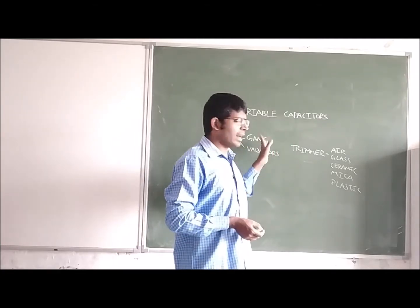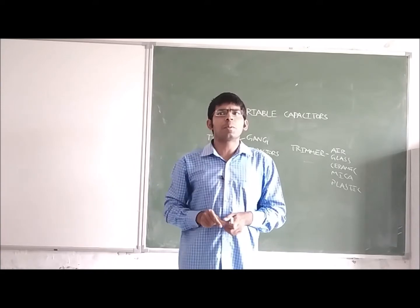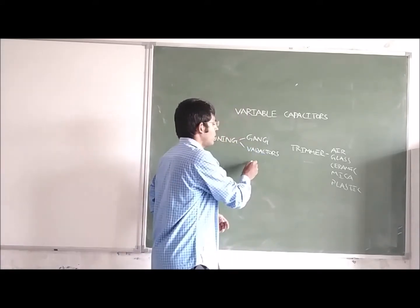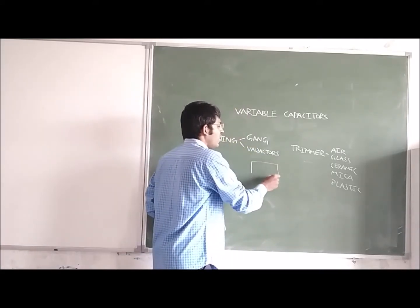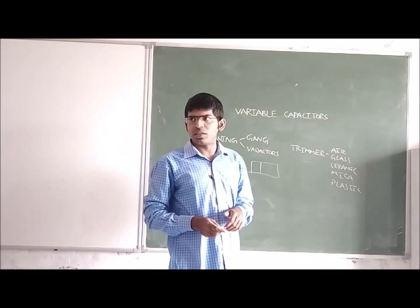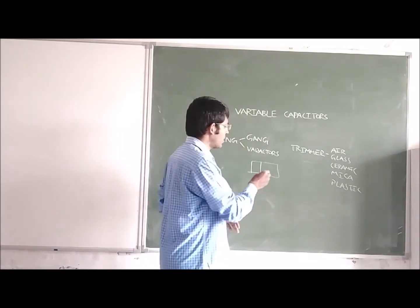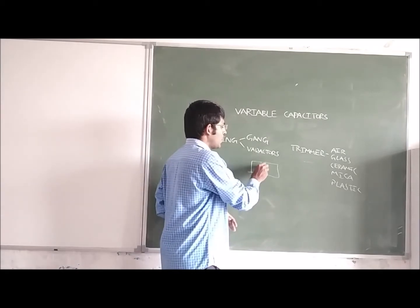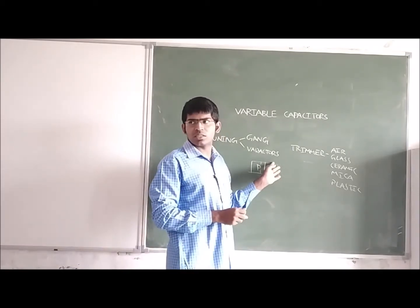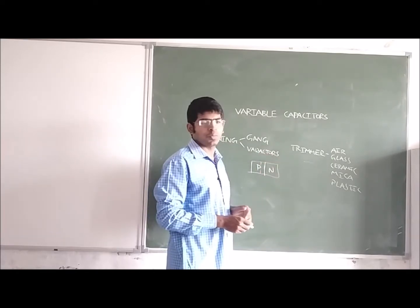In varactors, we use semiconductor material. We will discuss this in later chapters, but simply, for your understanding: we use a P-type semiconductor and an N-type semiconductor. This combination forms a P-N diode.